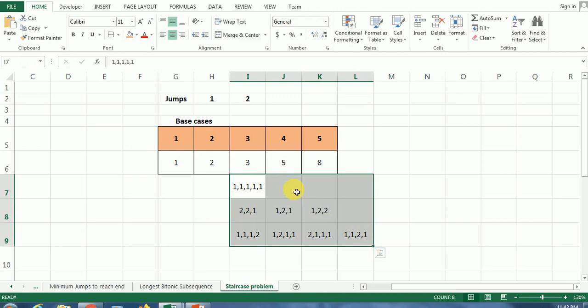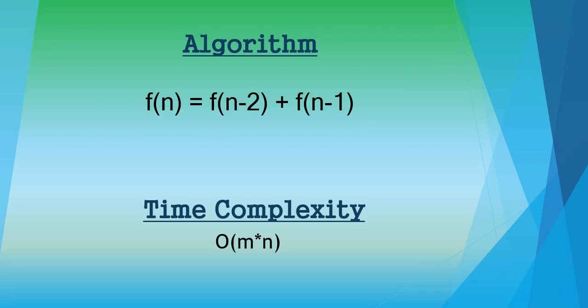Now we are going to look at the algorithm. F(n) = F(n−2) + F(n−1). If you are given one more option — let's say three, meaning you can climb three steps at a time — it is very simple. All you have to do is add F(n−3) to the algorithm. So it becomes: F(n) = F(n−3) + F(n−2) + F(n−1). No need to worry — it is very simple.